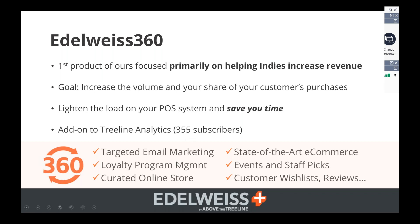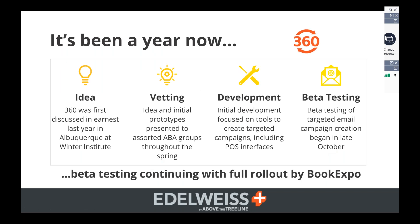There are different aspects to this. Targeted email is the big part of it, but it's also a loyalty program management tool with a way of integrating your staff picks. The idea came from a conversation I had with Nicole at the Bookworm of Edwards in Colorado. She was saying that one of the things Amazon can do is proactively send emails out to customers 24/7 with recommendations, and it's just very difficult for indies to do. So we were talking about whether there's a way we could build that into Edelweiss — that's what's evolved into 360.